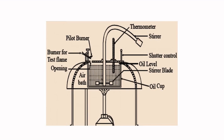Here you will see the stirrer, then the thermometer. The oil cup is given here; the oil level is up to this mark. The stirrer has blades to maintain uniform temperature. There are 2 burners used here — this is the pilot burner, which introduces the flame to the vapours coming out of this point. Then another one, that is the burner for the test flame. Here you can see the shutter control.